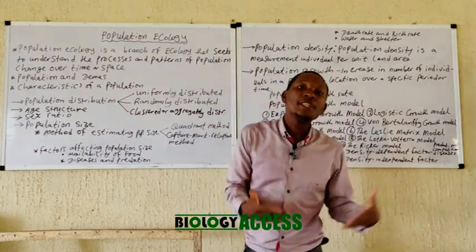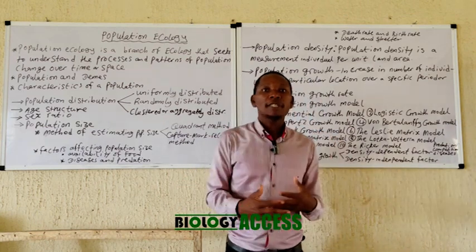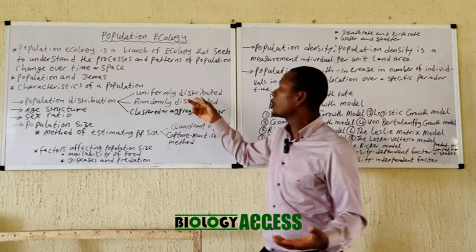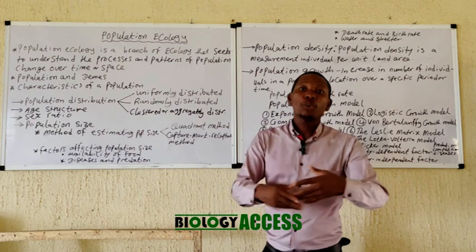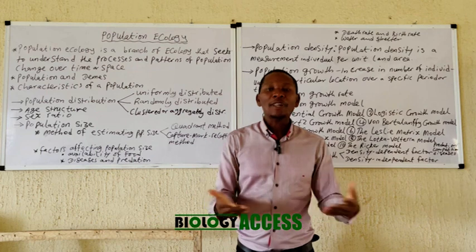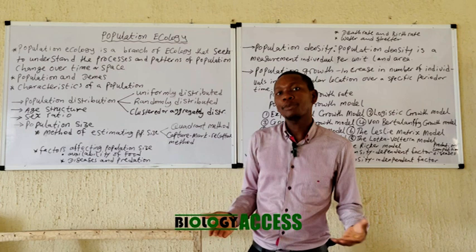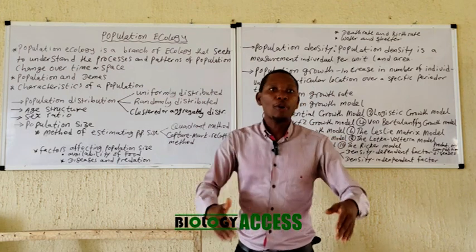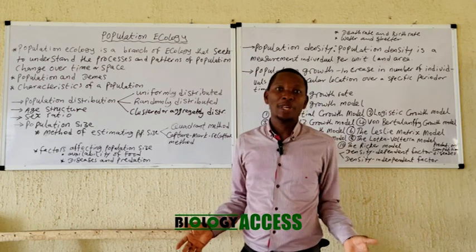Let's start with the first one: population distribution, which deals with how a population is dispersed or spread over a particular geographical location being studied. The population can be uniformly distributed, meaning they are evenly dispersed around the geographical location. Factors such as competition and territorial behavior can influence this even distribution.